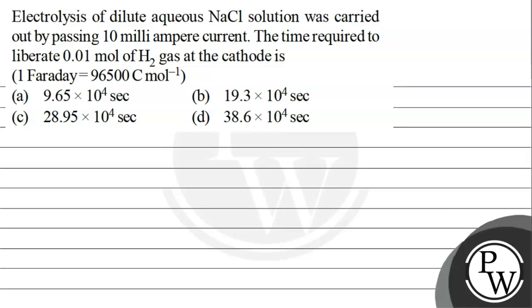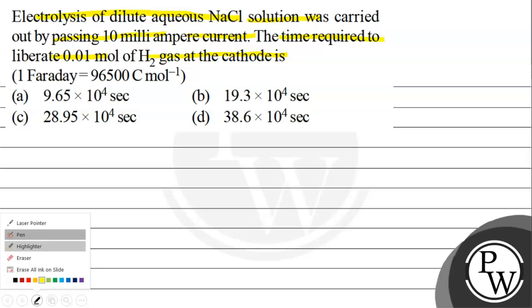Hello Bacho, let's read this question. The question says electrolysis of dilute aqueous NaCl solution was carried out by passing 10 mA current. The time required to liberate 0.01 mole of hydrogen gas at the cathode is: option A 9.65×10⁴ seconds, option B 19.3×10⁴ seconds, option C 28.95×10⁴ seconds, option D 38.6×10⁴ seconds.